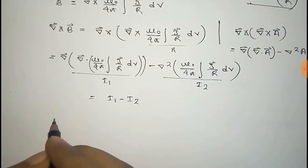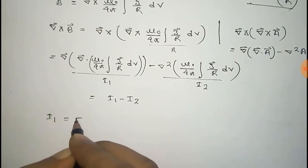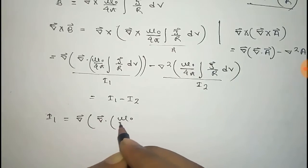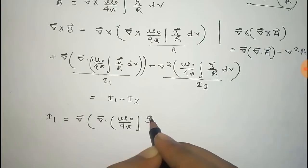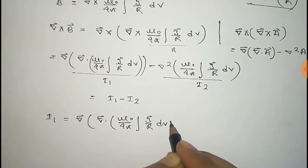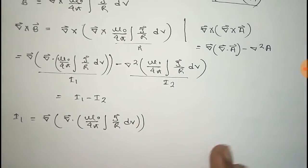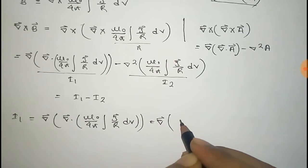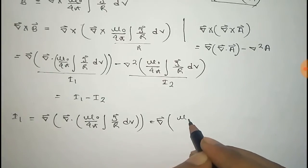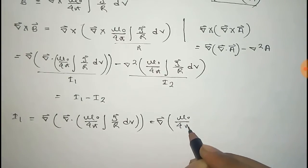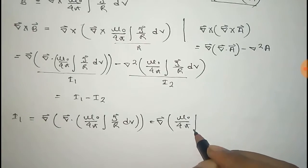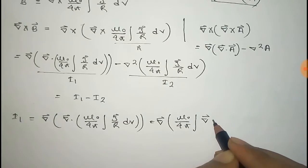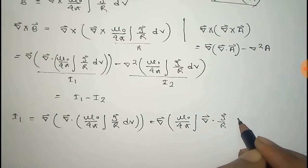Now for the first term I1, that equals nabla times the divergence of μ₀/4π times the integration of J/r dv. The constant μ₀/4π comes out, and nabla goes into the integral, so it will be the divergence of J/r dv.